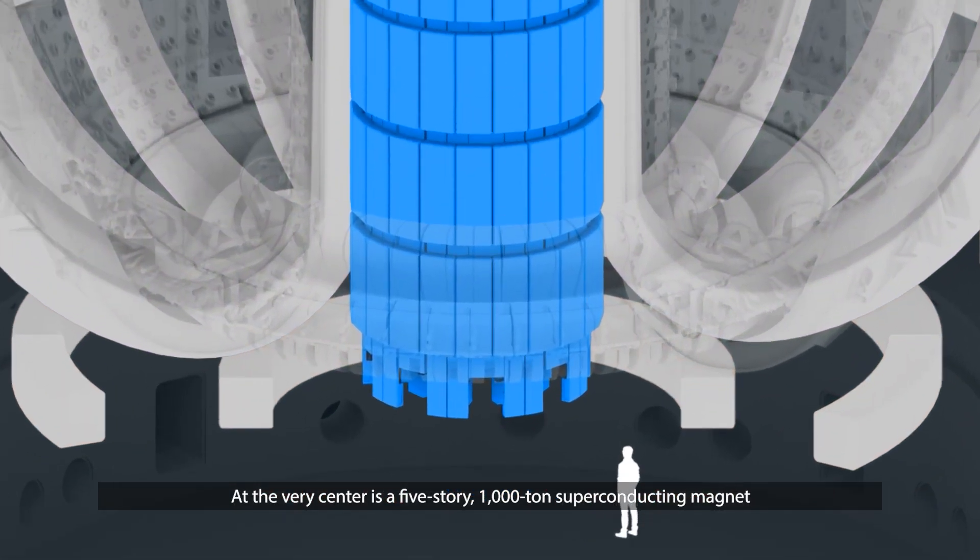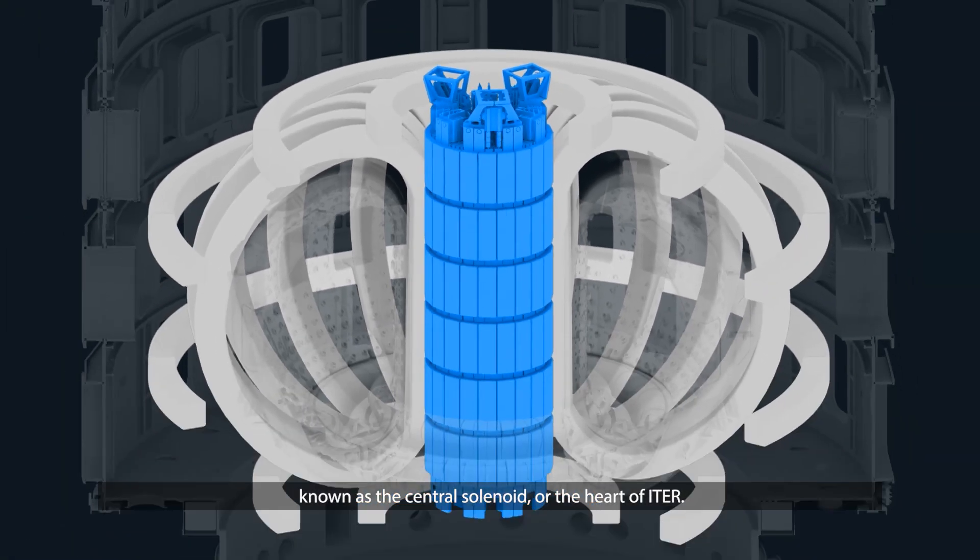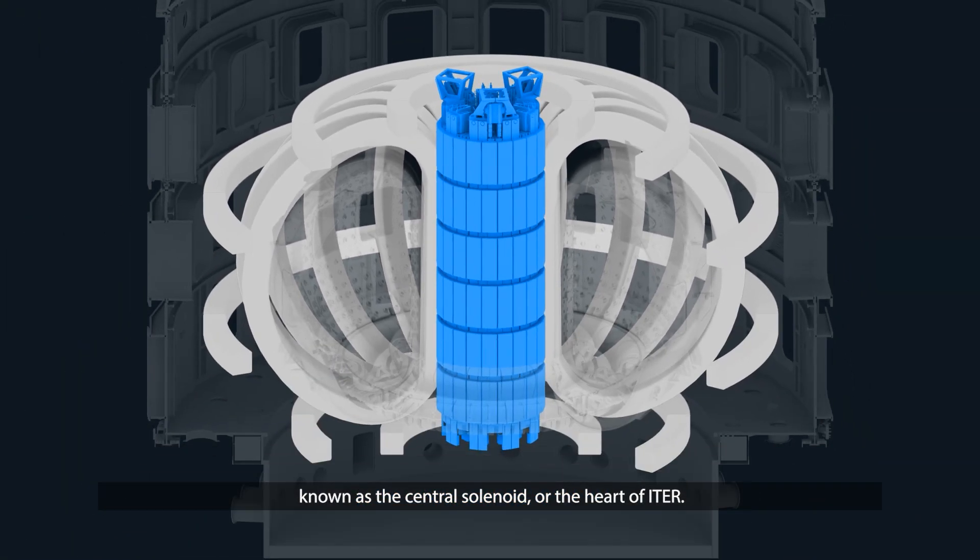At the very center is a five-story, 1,000-ton superconducting magnet known as the central solenoid or the heart of ITER.